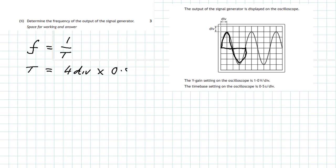So the period T of that signal is 4 times 0.5, which is 2 seconds. But we want to find the frequency, so the frequency is equal to 1 divided by the period, which equals 1 divided by 2. Therefore the frequency has got to be equal to 0.5 hertz.